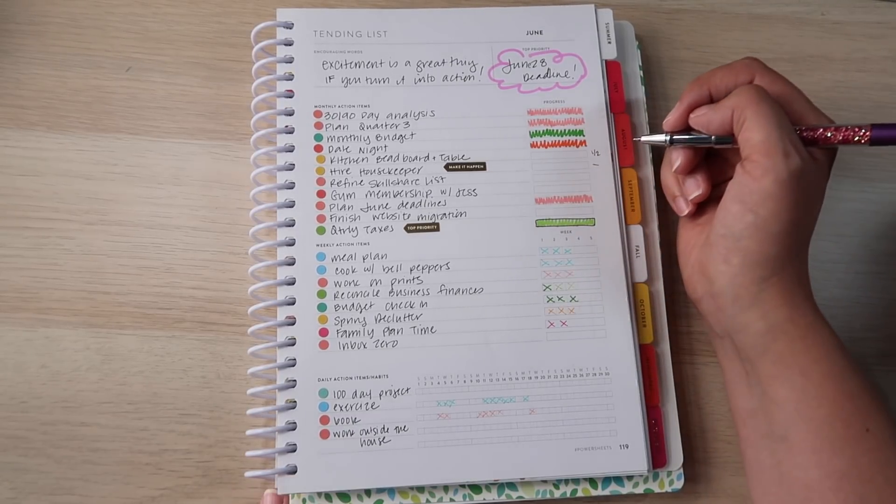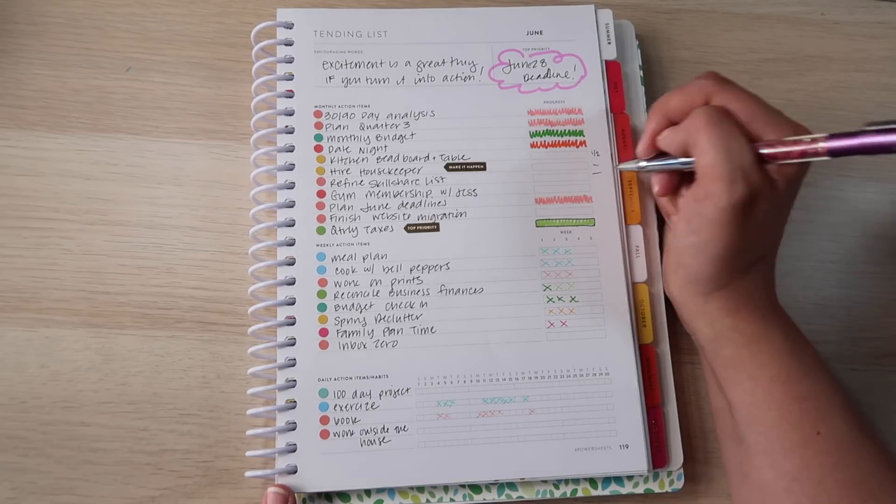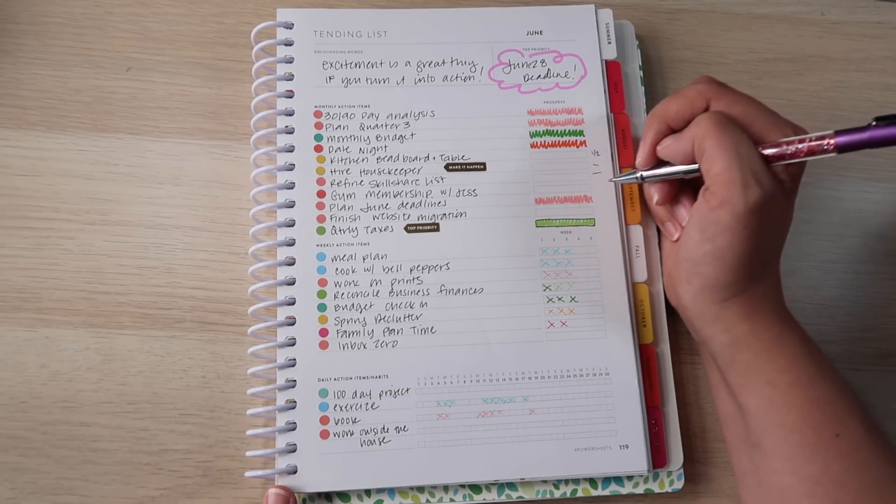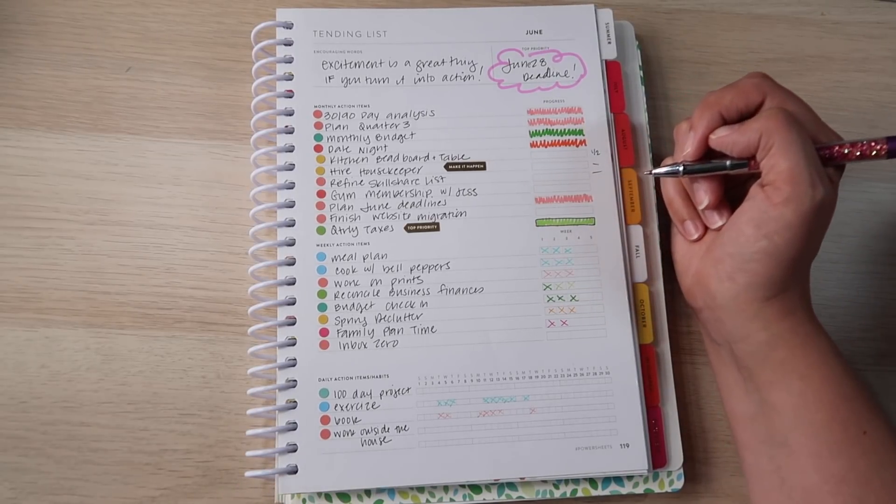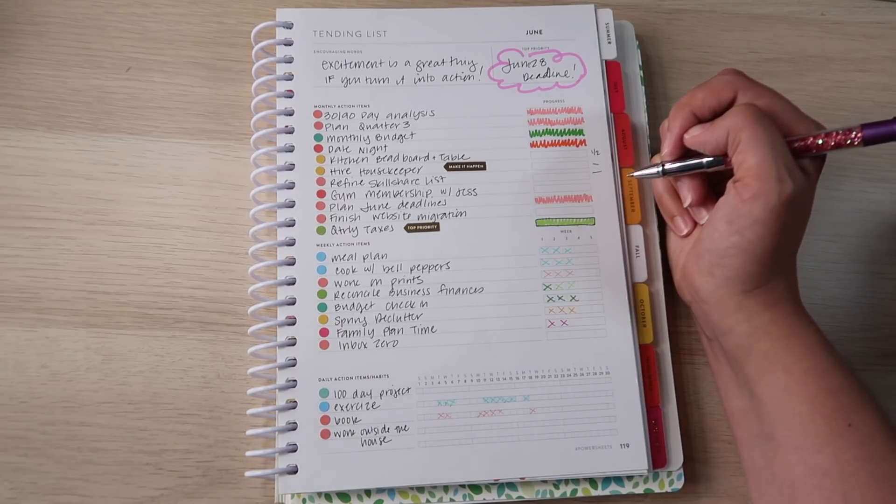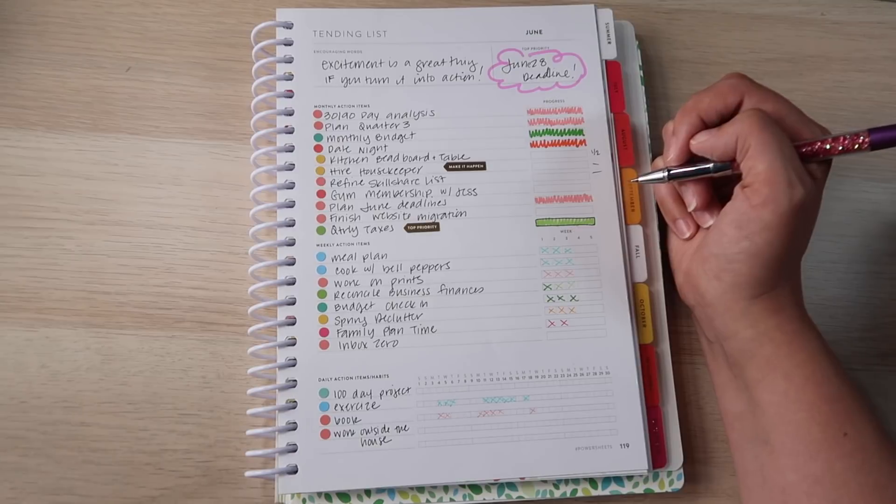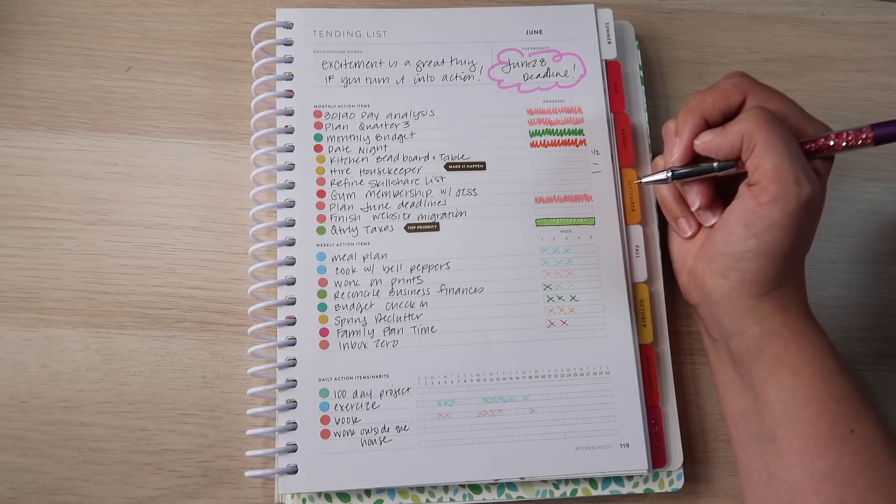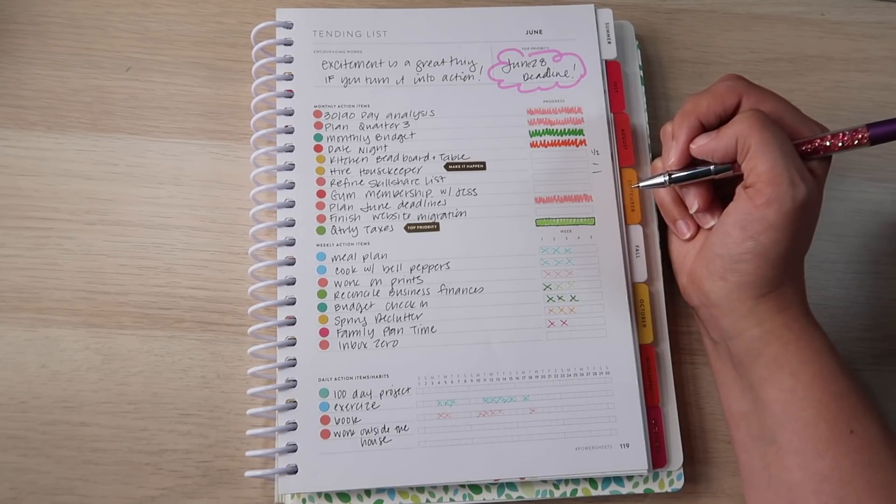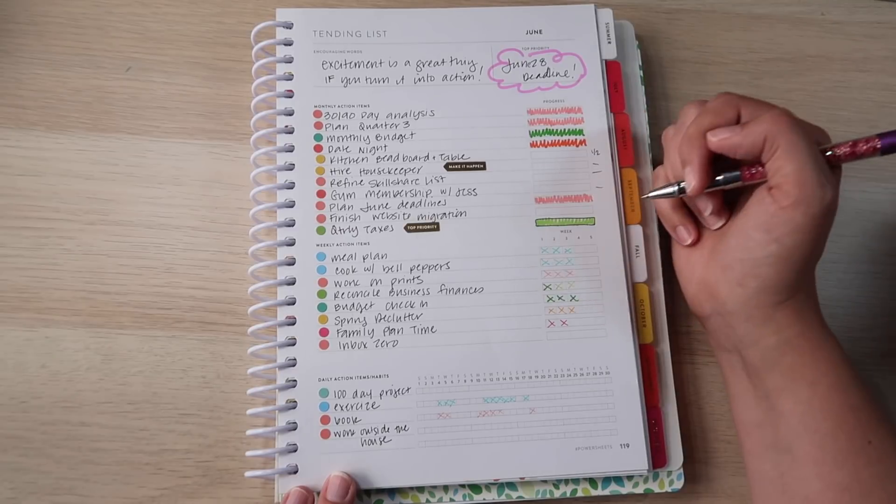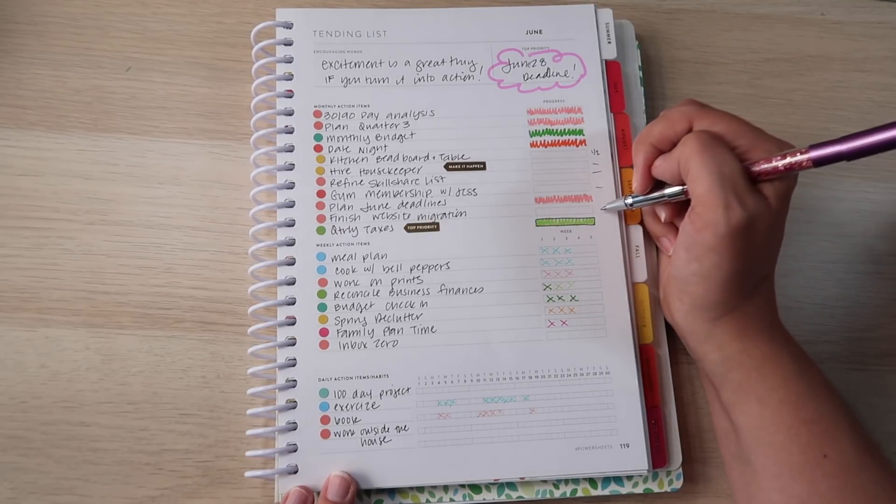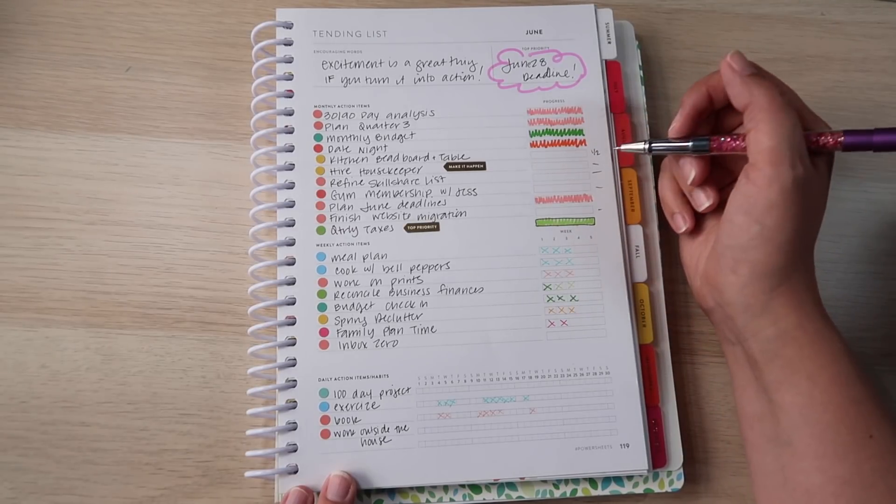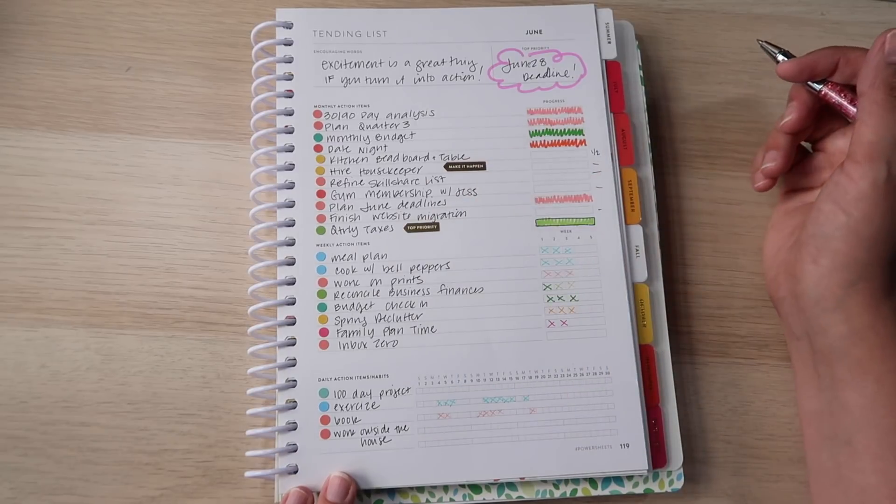Refine the Skillshare list. Unless I get that done while we're traveling, probably not. Gym membership with Jesse. We almost did it, but we were running out of time on his lunch. It was one of our chances to sit down and eat together. So I'm guessing it'll probably be August when that happens because July I'm having surgery mid-month and I don't want to sign up for a gym membership and then not be able to use it for two of the weeks in that month. So it'll probably be August. And finish website migration, not a fucking chance. So aside from the kitchen, beadboard, and the table, everything else is getting punted.